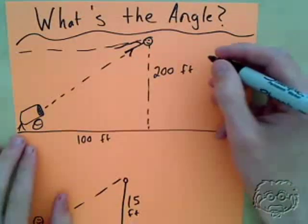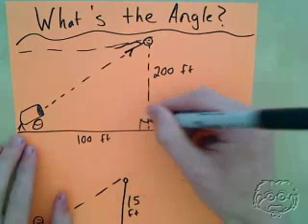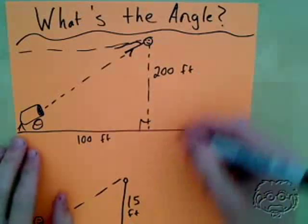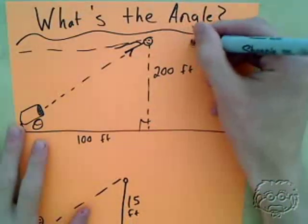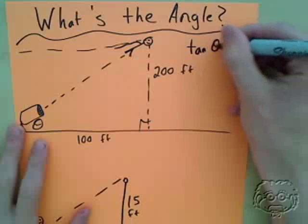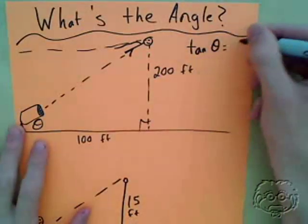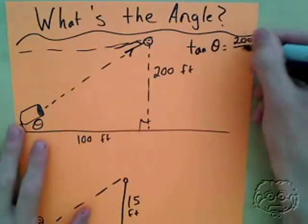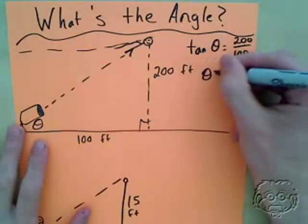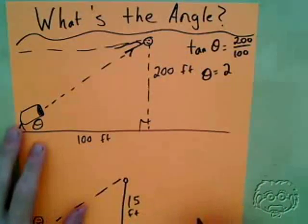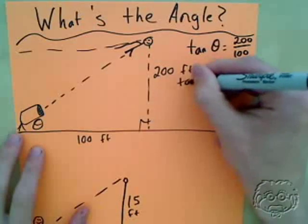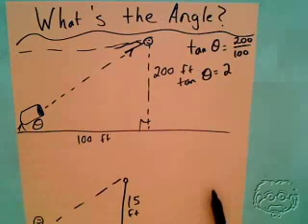Alright? Well, here I have two legs of a right triangle. So, I would say tangent of theta equals opposite over adjacent, which is 200 over 100. I would say that theta equals, or tangent theta equals 2.